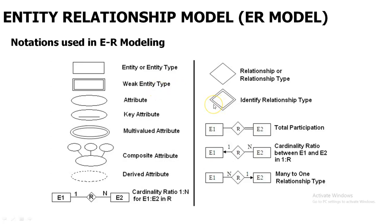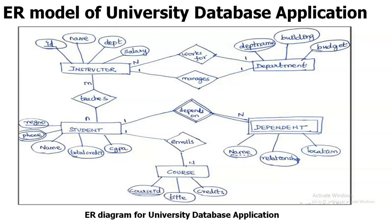We have taken the university database application as an example for representing the ER model. In this ER model, for the university database, there are five entities: instructor, student, department, dependent, and course. These five are the entities of the university database model.